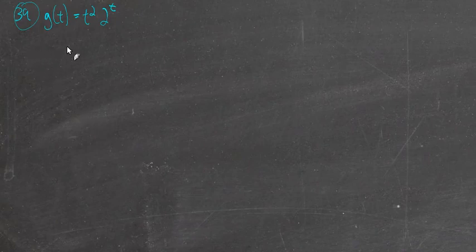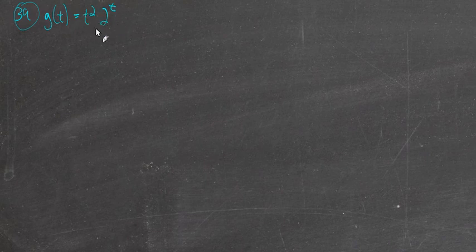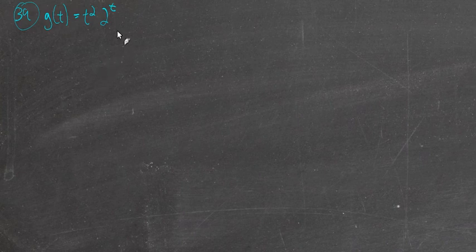Let's start with 39. We're trying to take the derivative of this function, which is a product of functions. They're probably just trying to test us, see if we notice that this is a power function, like a polynomial function, and this is an exponential function. We're multiplying them together, so we just need to apply the product rule.